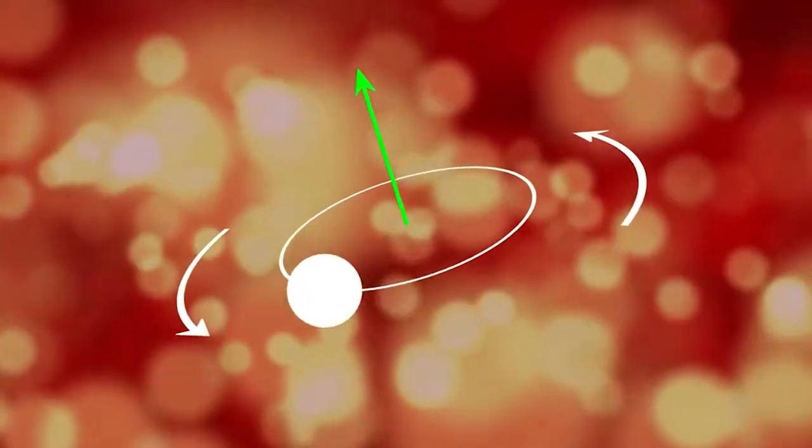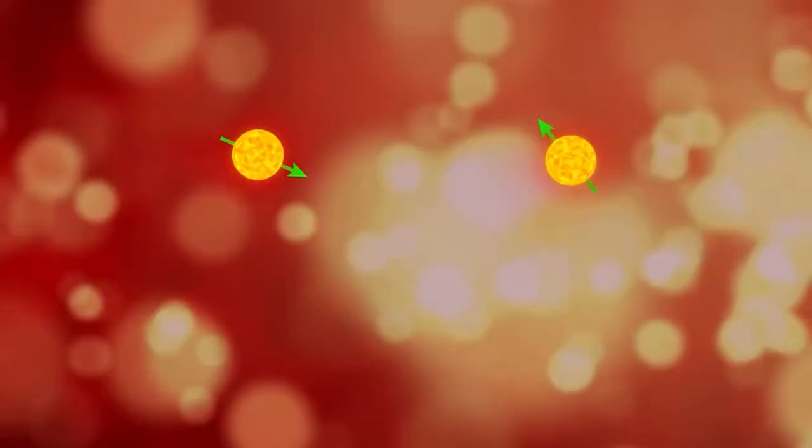For example, the macroscopic angular momentum of objects actually rotating is always perpendicular to the plane of rotation. Similarly, for quantum objects, spin always has a definite direction in space, and this direction can vary among different particles.